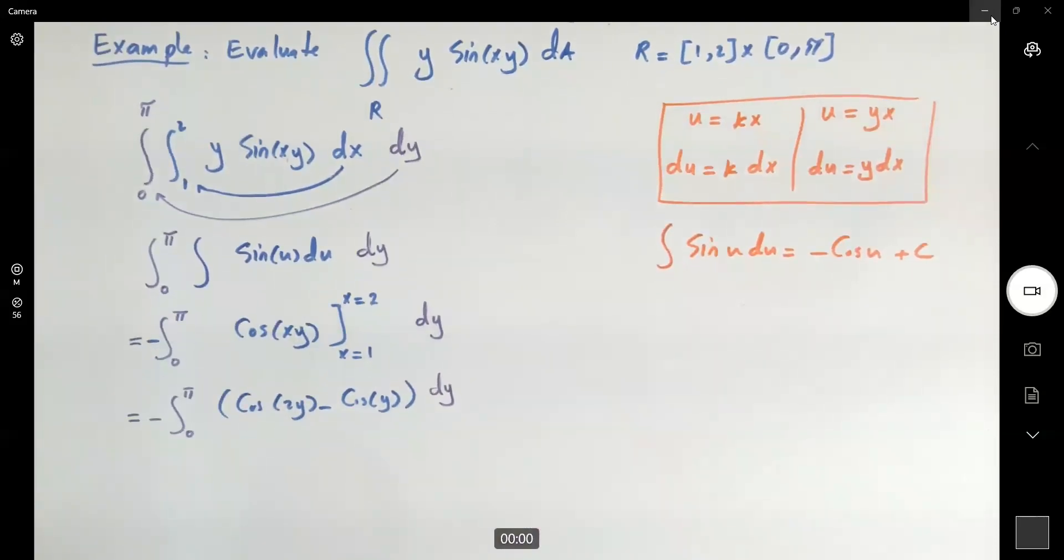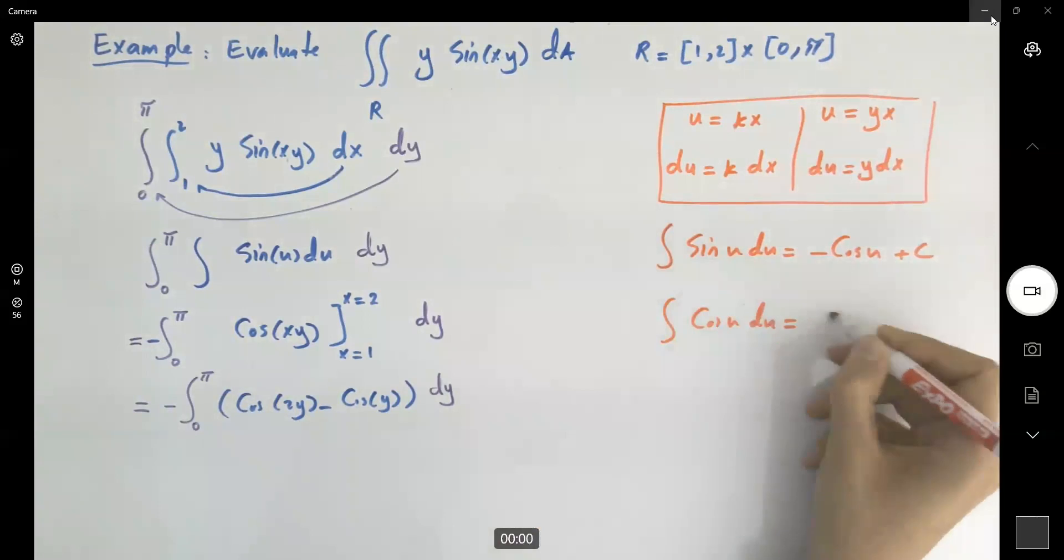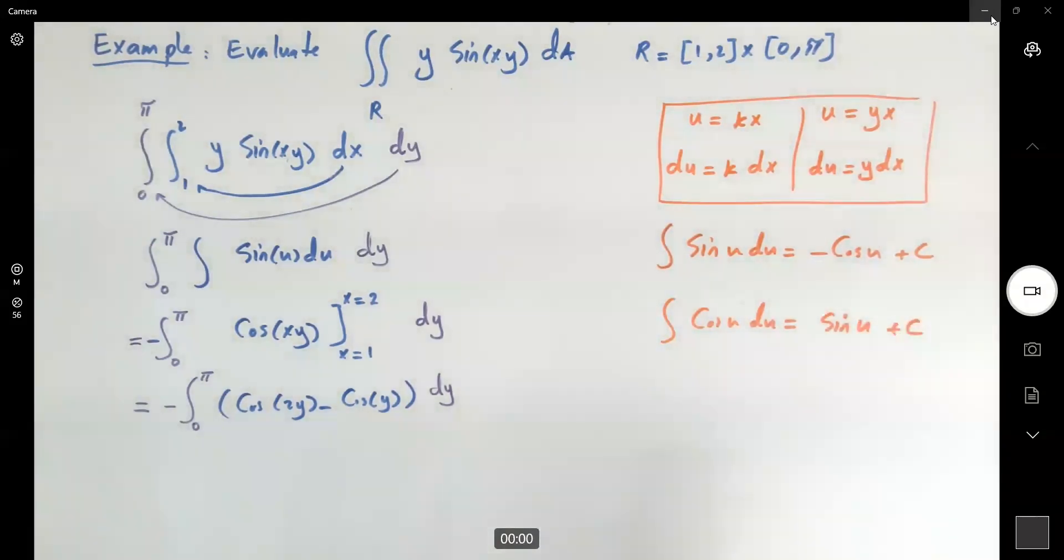So now we are taking the integral of cosine. For the integral of cosine u, du, it's just sine u plus the constant of integration.